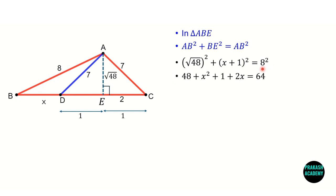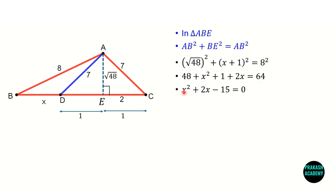Expanding (x + 1)² gives x² + 2x + 1. So the equation becomes 48 + x² + 1 + 2x = 64, which simplifies to x² + 2x − 15 = 0.